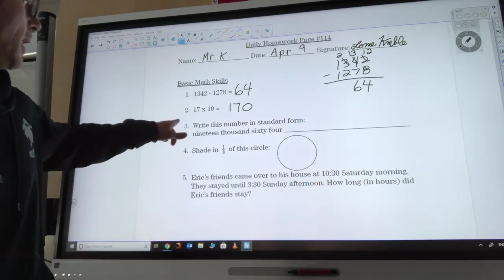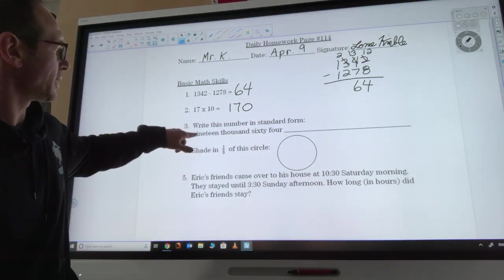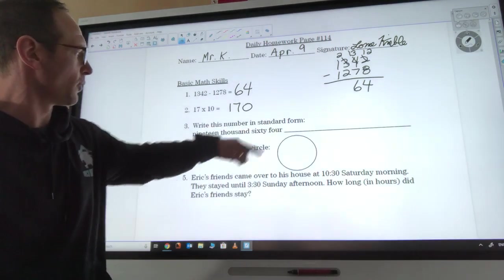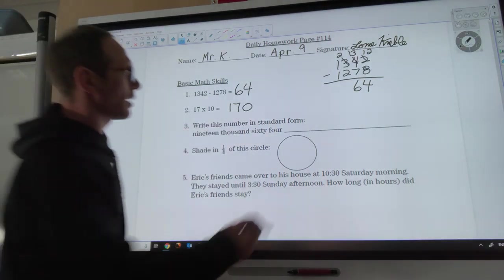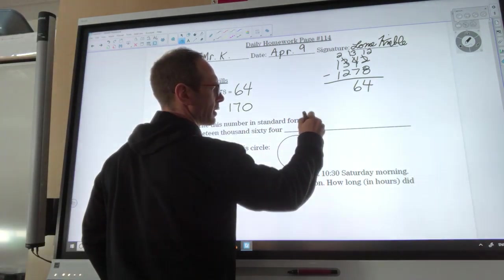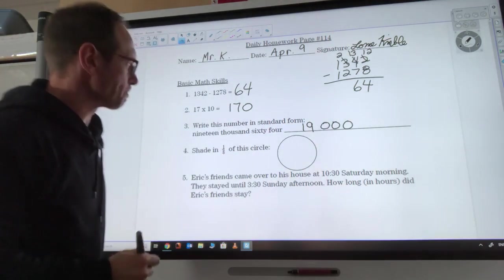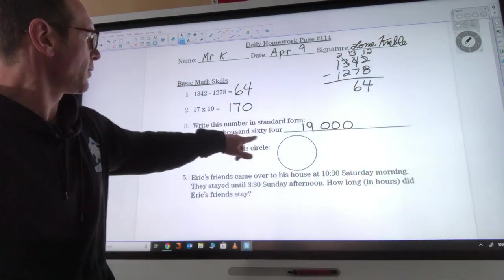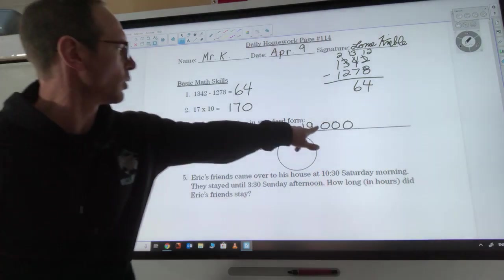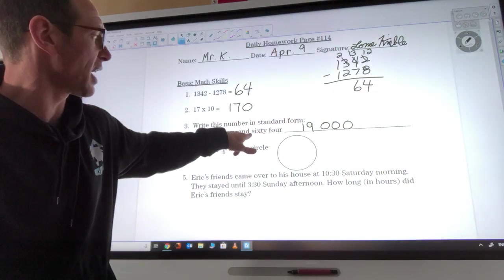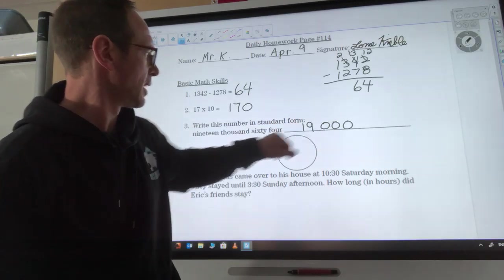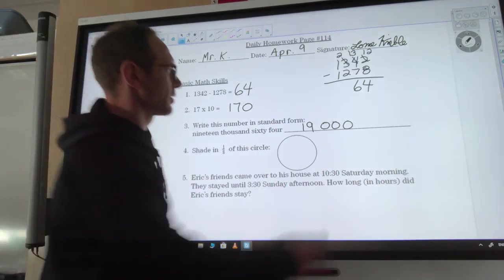I want to know the standard form of this number: 19,064. So the 19,000 would start off like this: 19,000 would look like this. Now 19,064, I'd be looking next for what goes in the hundreds place, and you can see there's nothing there. That means there's a zero in the hundreds place.